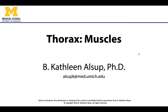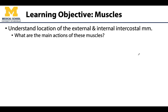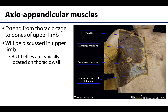Hello anatomy friends, this is Dr. Alsup. Let's finish our discussion of the regional musculoskeletal anatomy of the thorax with the muscles. Our main focus will be on the intercostal muscles, particularly those easiest to see: the external and internal intercostals. I do want to note that some muscles are attached to or covering the thoracic cage but are primarily involved in serving or moving other regions of the body.